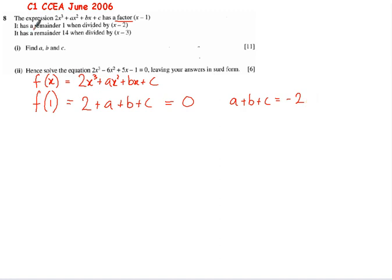Now the second line tells us it does have a remainder of 1 when divided by x - 2. So when I find f(2) and put that in, I should get a remainder of 1. When we put 2 in here, 2³ is 8 times 2 is 16. 2² is 4 times a is 4a, 2 times b is 2b plus c. And rearranging that, we get 4a + 2b + c equals -15.